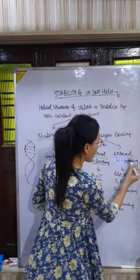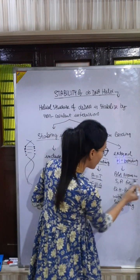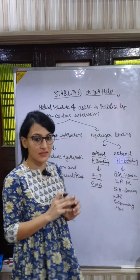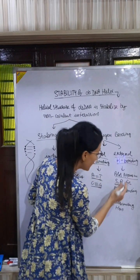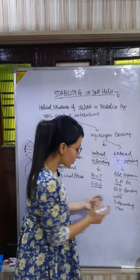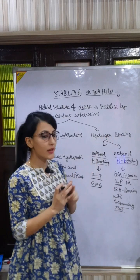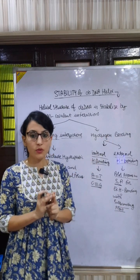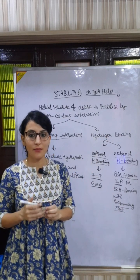The external hydrogen bonding is present between the polar atoms in sugar and phosphate, which attract the surrounding water. Hydrogen bonding is a minor force which stabilizes the double-stranded DNA.